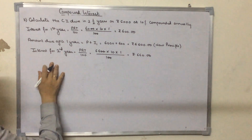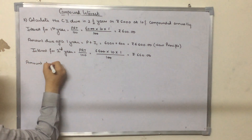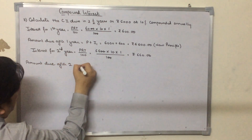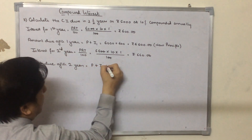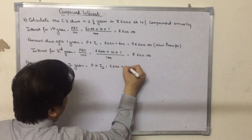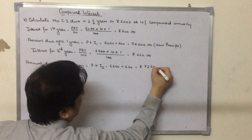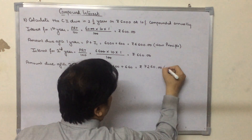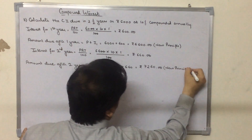We next find the amount due after two years. Here it is P plus I2. The principal is 6600 plus 660, which is 7260 rupees. This 7260 becomes the principal for the next half year which we have to calculate.